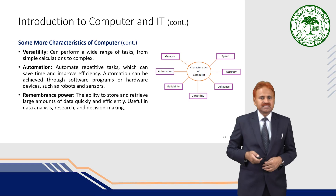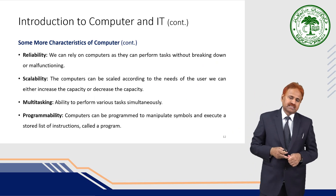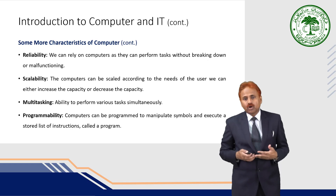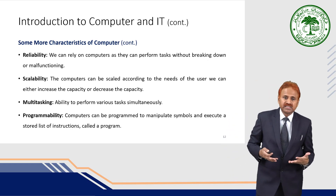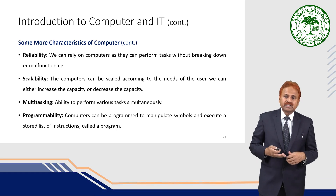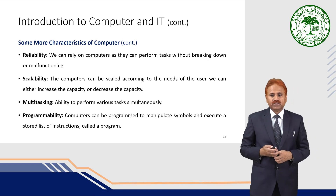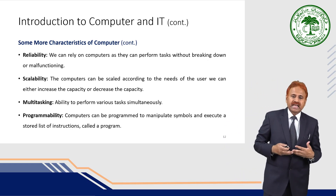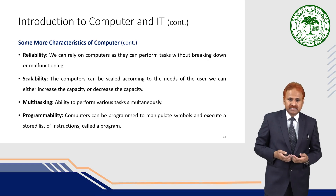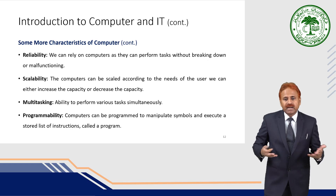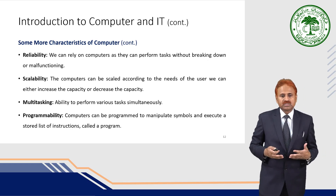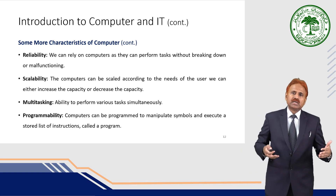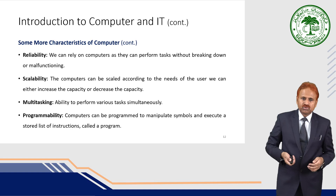Computers can remember things for a long period of time by storing data in memory devices. The ability to store and retrieve large amounts of data quickly and efficiently is another characteristic, useful in data analysis, research, and decision making. Reliability means we can rely on computers to perform tasks without breaking down or malfunctioning. Scalability means computers can be scaled according to the needs of the user — capacity can be increased or decreased. Multitasking is the ability to perform various tasks simultaneously. Programmability means the computer can be programmed to manipulate symbols and execute stored instructions called a program, producing results accordingly.